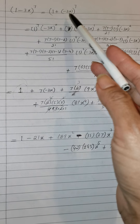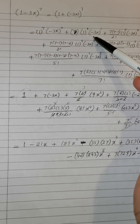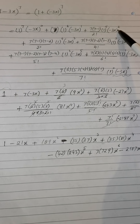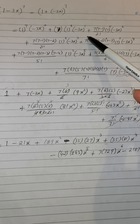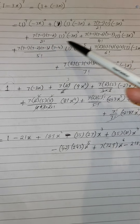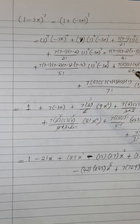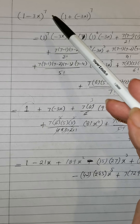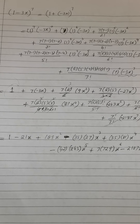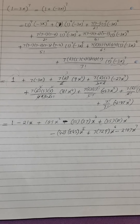Where the power of (-3x) is an odd number, the answer will be negative — so the second term will be minus. Where the power of (-3x) is an even number, it will be positive. For example, where the power of (-3x) is 3, the entire expression for that term will be minus. Keep this in mind while simplifying: the minus sign of the second term affects the answer depending on whether the power is odd or even.